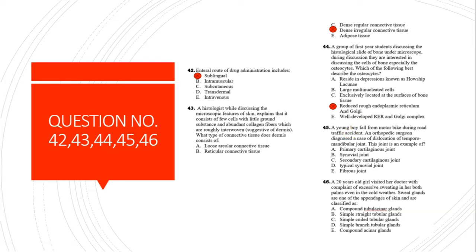Question 45: A young boy with a dislocated temporomandibular joint after a road accident. The temporomandibular joint is an example of a synovial joint, which is active when we talk or chew.